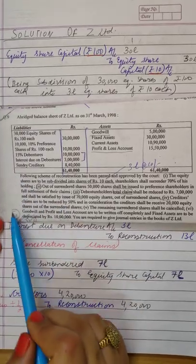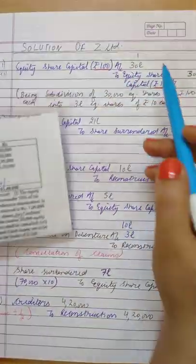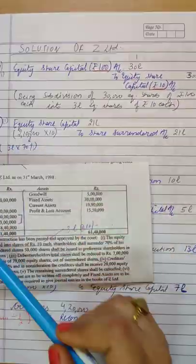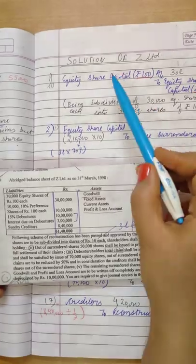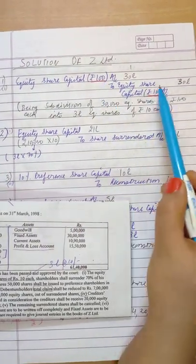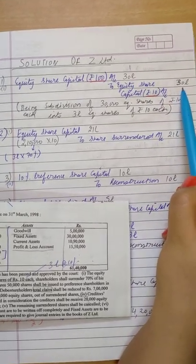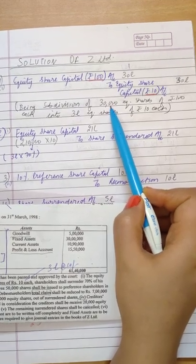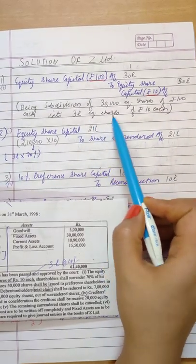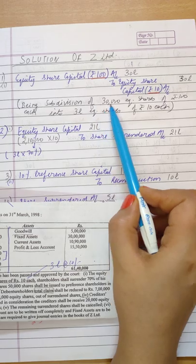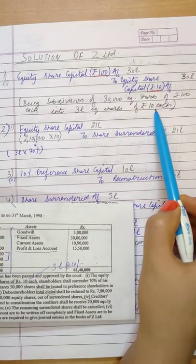We have discussed all the entries verbally. Now let us go through them in detail. First entry: the subdivision of shares to Rs.10. Entry is Equity Share Capital (Rs.100) Dr. to Equity Share Capital (Rs.10), Rs.30 lakh — being subdivision of 30,000 equity shares of Rs.100 each into 3 lakh equity shares of Rs.10 each. Total paid-up amount remains the same; only the number of shares and face value differ.